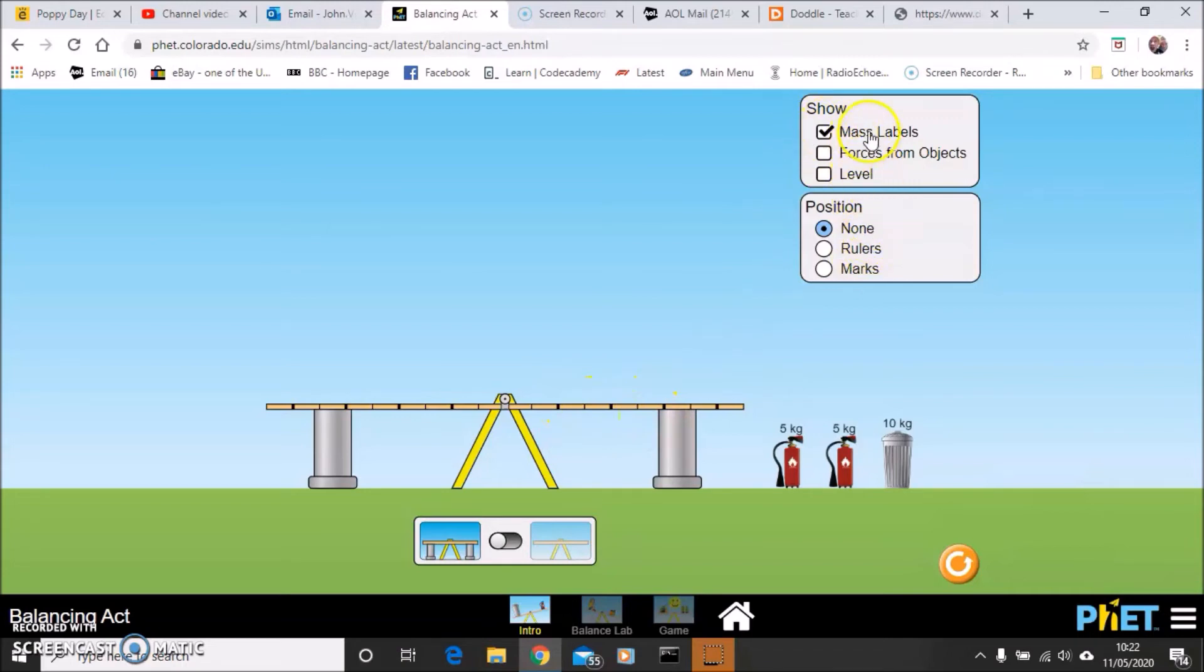You get different objects that you can put on that seesaw. Up here, there's options you can switch on. I'm going to suggest that you switch on the mass labels. That tells you the mass of the objects you're putting on there. Doesn't tell you how much they weigh. Remember, one kilogram of mass is equivalent to 10 newtons here on earth. So if you've got a fire extinguisher with a mass of five kilograms, that weighs or produces a force of 50 newtons. I'm also going to suggest you switch on the forces from the objects. What that will do if I just pick something up and put it on our seesaw here, it will give you a little arrow. I'm also going to suggest that you switch on the level and that will show you how level each side of the seesaw is. In the second box that says position switch on rulers. That way you can accurately measure how far your objects are from the pivot.